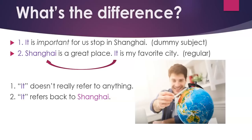What's the difference between a dummy subject and a regular subject when we use the word it? Let's look at some examples. Number one: 'It is important for us to stop in Shanghai.' This is using a dummy subject — it doesn't really refer to anything. Sentence number two: 'Shanghai is a great place. It is my favorite city.' In this case, it refers back to Shanghai. So this is a regular subject because it refers back to an object or another subject.